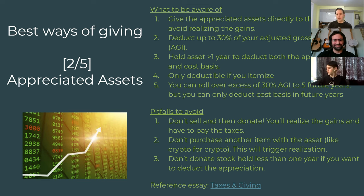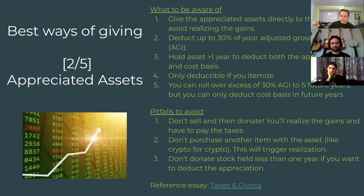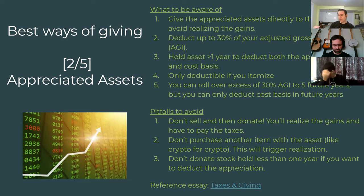Don't sell the stock — give the stock directly. How much stock can you give and get a tax benefit from? This only applies for folks who itemize on their taxes — that is, you have deductions beyond the standard deduction. If you don't itemize, you won't get all the financial benefits here because you can't make the deduction. But even if you don't itemize, when you gift appreciated stock you still don't realize the gains. So rule one: don't sell the stock, gift it directly.